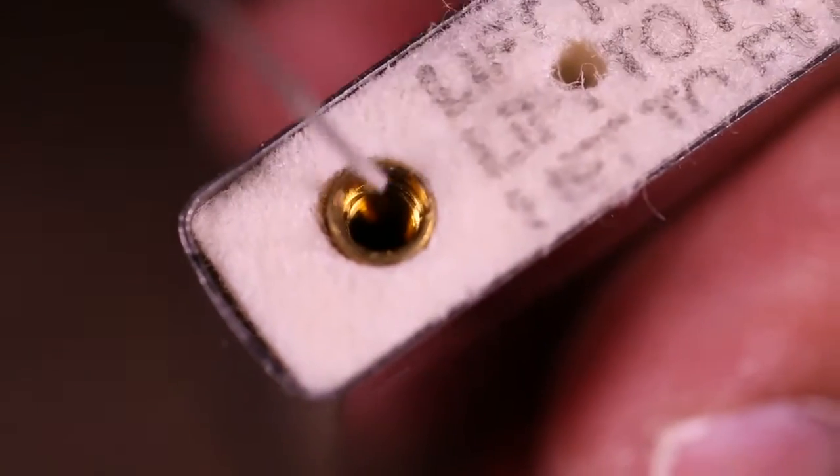Remove any stubborn flint slivers or residue with an unfolded paper clip. Insert a new flint in the brass-colored flint tube.